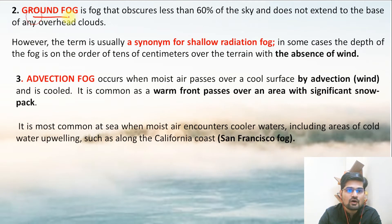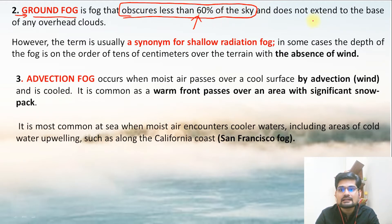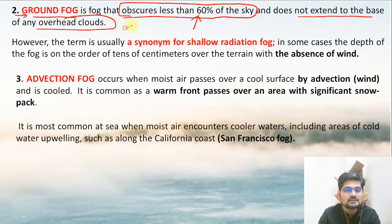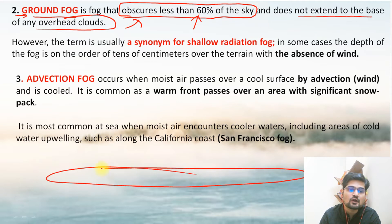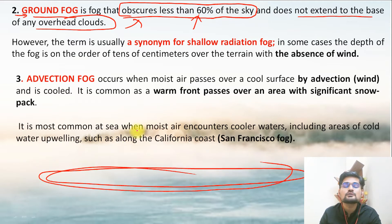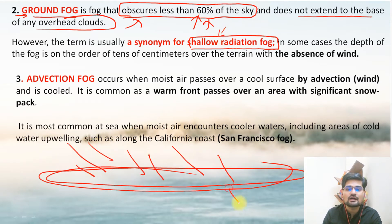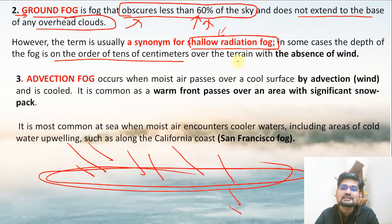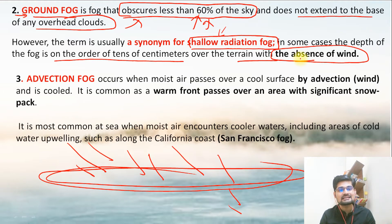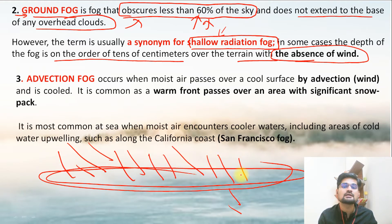Ground fog is another type — the name itself suggests it is near the ground. It obscures less than 60% of the sky and does not extend to the base of any overhead cloud. It is also used as a synonym for shallow radiation fog. The obscurity level being less than 60% means it is shallow, allowing little insolation to reach the ground. In some cases the depth of fog is on the order of 10 centimeters over the terrain with absence of wind.